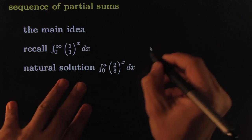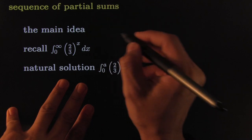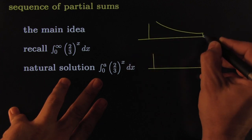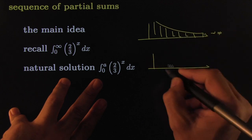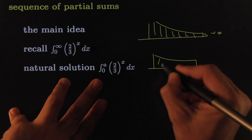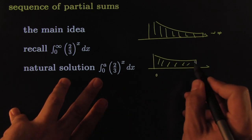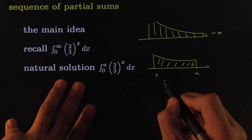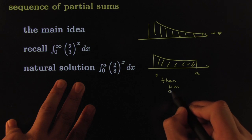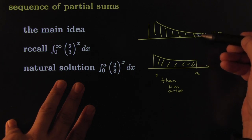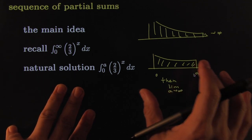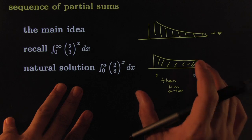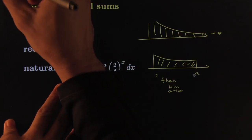The remedy was to break it up — instead of going all the way to infinity, stop at some point a. Go from 0 to a, compute that integral, then take the limit as a goes towards infinity. That's what we did for improper integrals, and that's exactly the same idea we'll use for infinite sums.